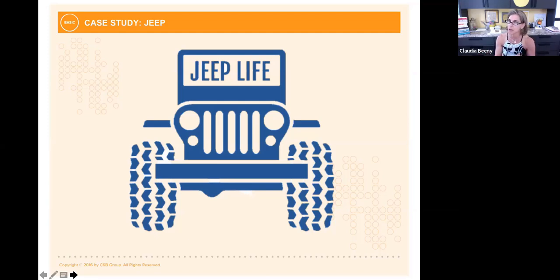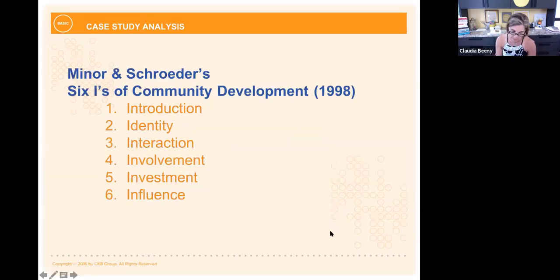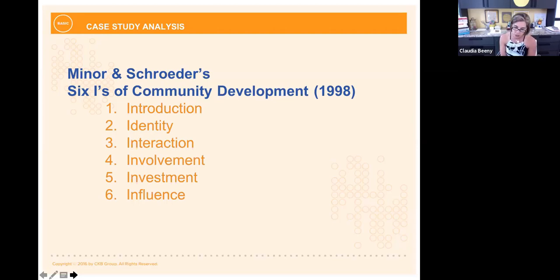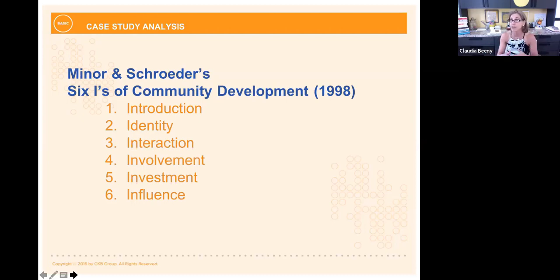Let's talk about the anatomy of Jeep and community through three lenses. The first is the six I's from our BASIC model. The first I is Introduction. Interestingly, as it relates to the Jeep wave, there is no formal introduction — when you buy a Jeep, nobody tells you people are going to wave at you and you have to wave back. You just pick it up. However, there is a cool story behind why the Jeep wave exists, and that's important to why it works and sticks.